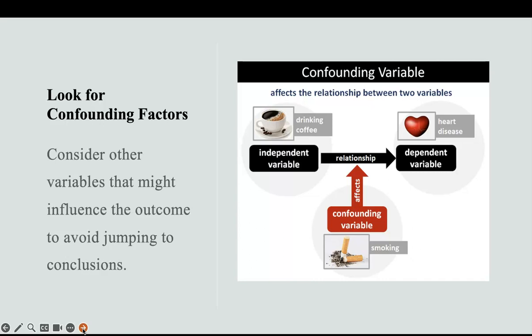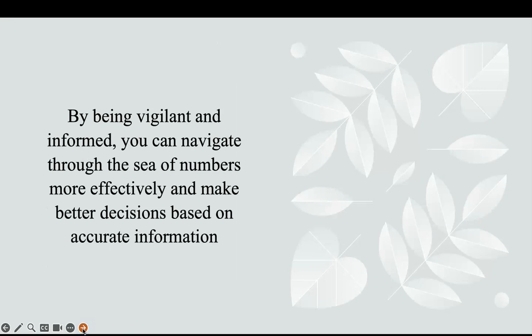Look for confounding factors. Consider other variables that might influence the outcome to avoid jumping to conclusions. For example, drinking coffee as an independent variable and heart disease as the outcome — what other variables could be compounded? Smoking, exercise — there are several other variables. Please understand those to make sure you grasp what might have another influence on that outcome.